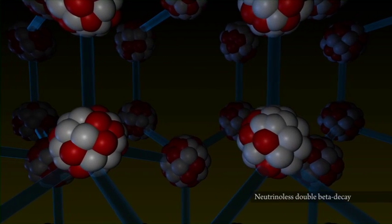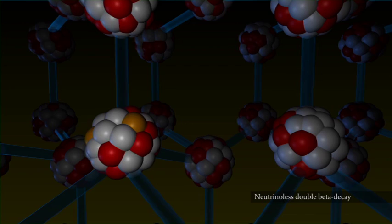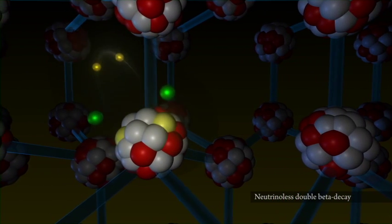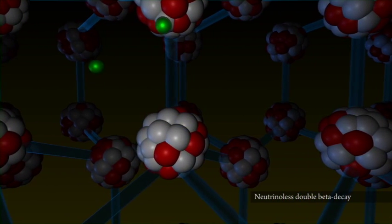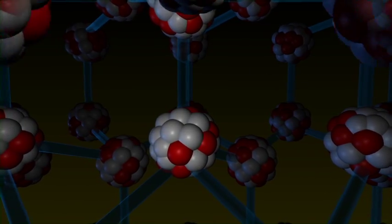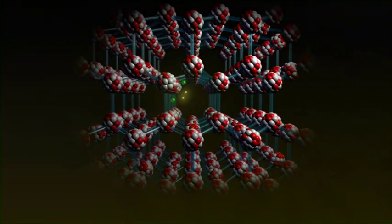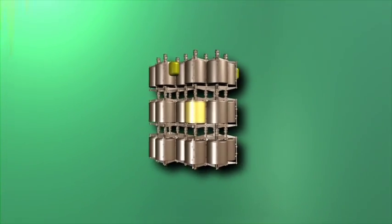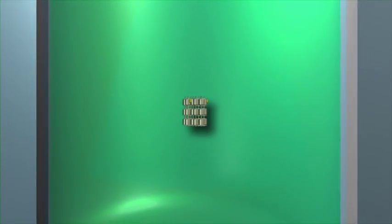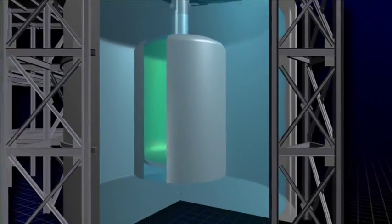If neutrinos are their own antiparticles, they could cancel each other out in the decay. Two neutrons decay at the same time into two protons. Only the electrons are released. The full energy released in the decay is absorbed by the detector as there are no neutrinos escaping. Thus the signal is expected at a very well-defined energy.